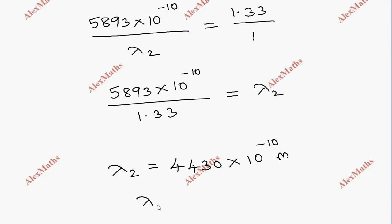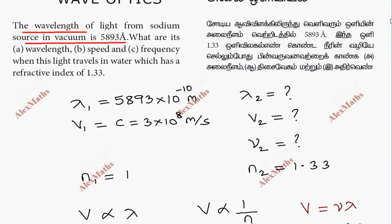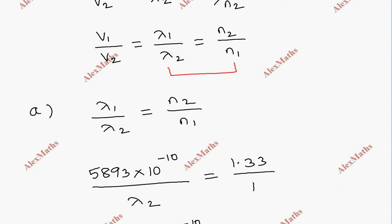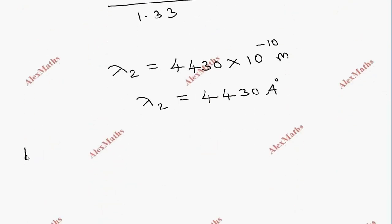So lambda 2 equals 4430 Angstrom units. Now for the speed, we use the relationship v1 by v2 equals n2 by n1.